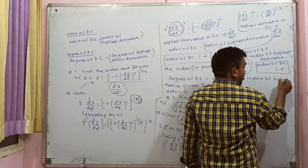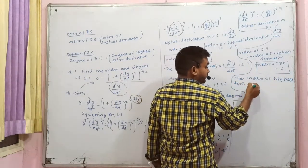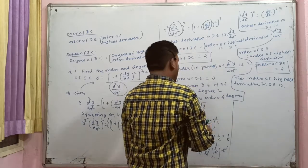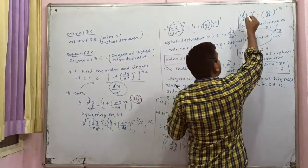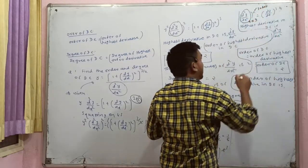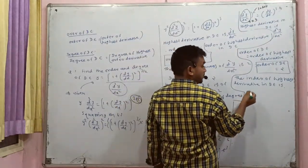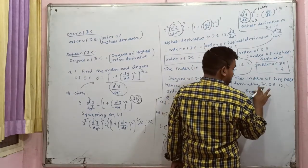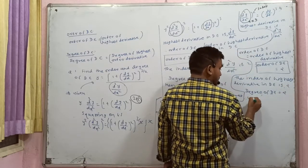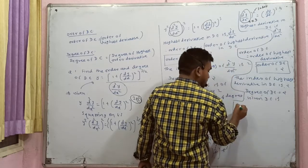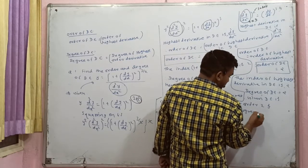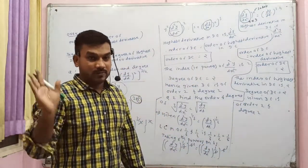The index of the highest derivative d²y/dx² in the differential equation is 2 — it is a double derivative with order 2 and index 2. Therefore, the degree of the differential equation is 2. Hence, the given differential equation is of order 2 and degree 2. Very simple. Thank you.